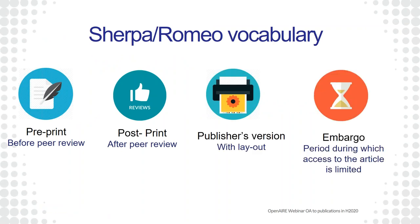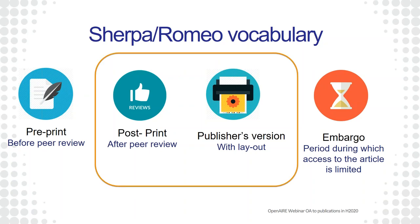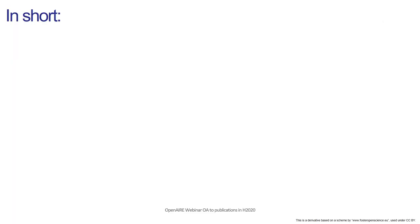Sherpa Romeo uses various vocabulary. The pre-print is the version of your publication before peer review. The post-print is the version after peer review. Or the publisher version — the one with layouts. It will also give information about possible embargoes. Post-print and the publisher version are both peer-reviewed, so if these are allowed, please upload these versions to your repository.